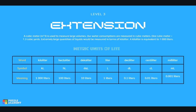Here is the table for metric units of liters. Kiloliter (KL) equals 1,000 liters. Hectoliter (HL) equals 100 liters. Decaliter (DAL) equals 10 liters. Liter (L) equals 1 liter. Deciliter (DL) equals 0.1 liters. Centiliter (CL) equals 0.01 liters. Milliliter (mL) equals 0.001 liters.